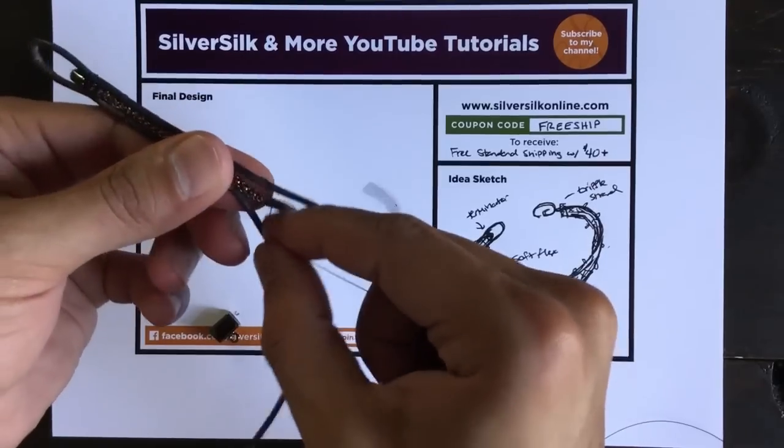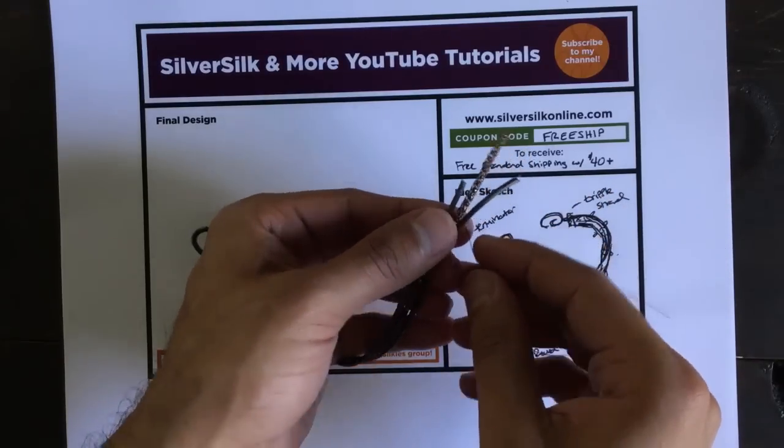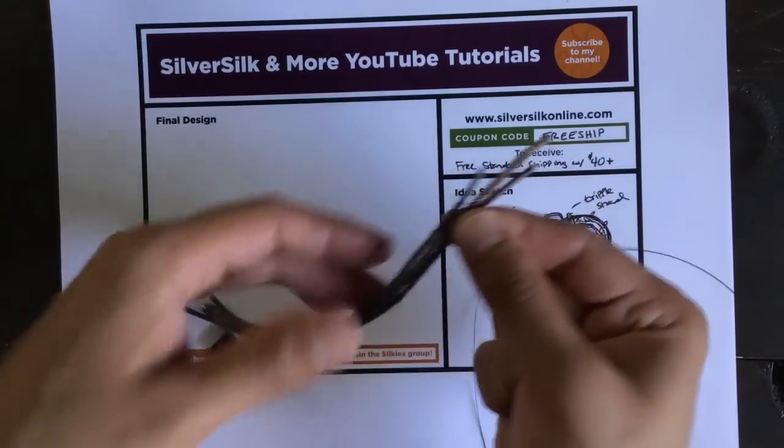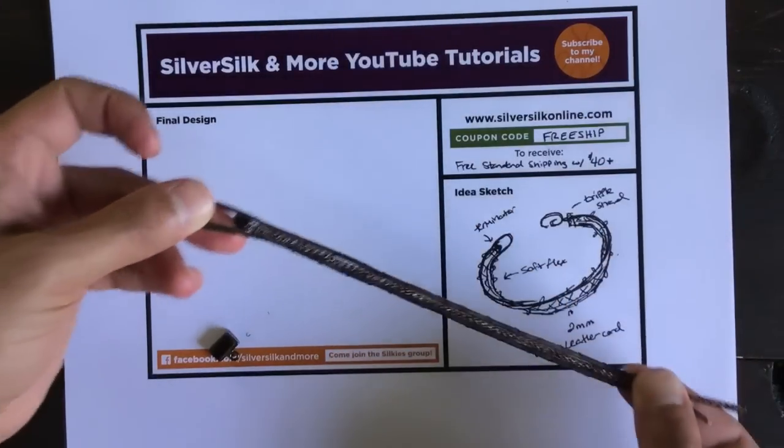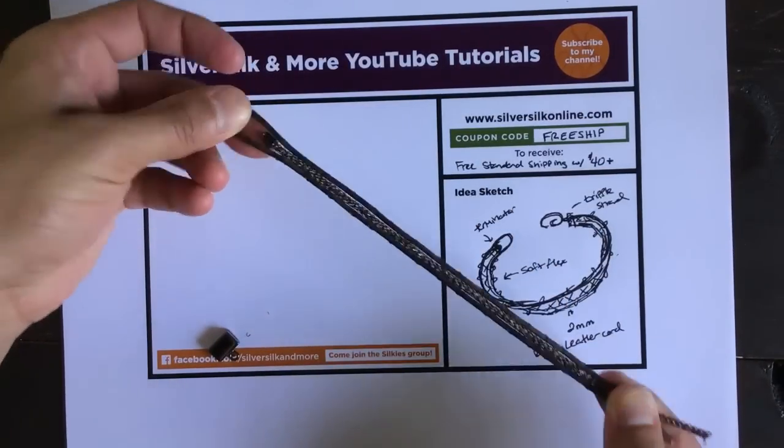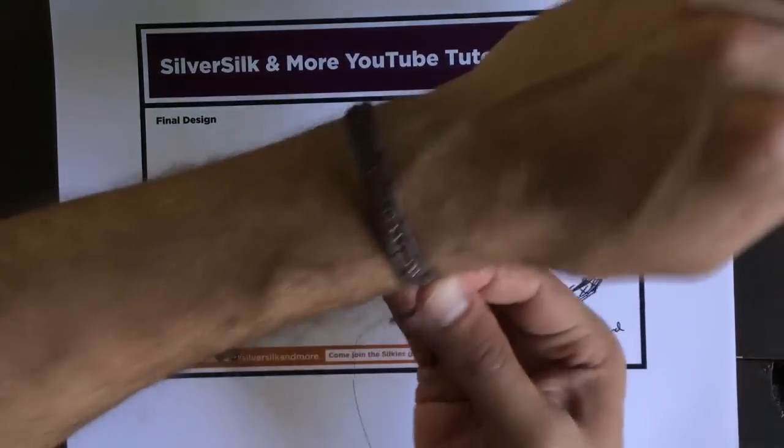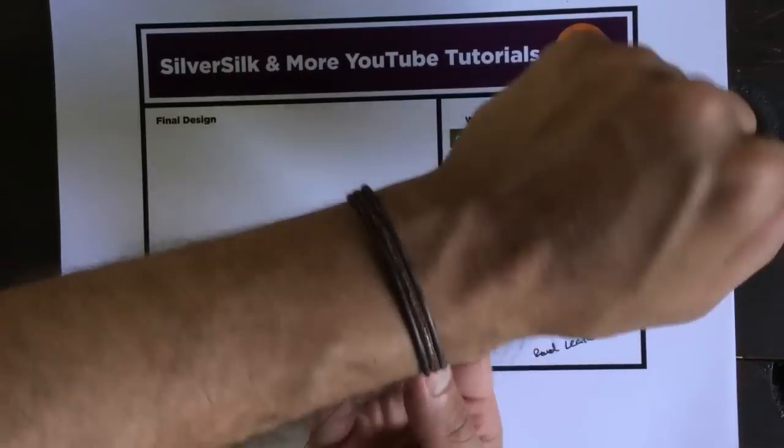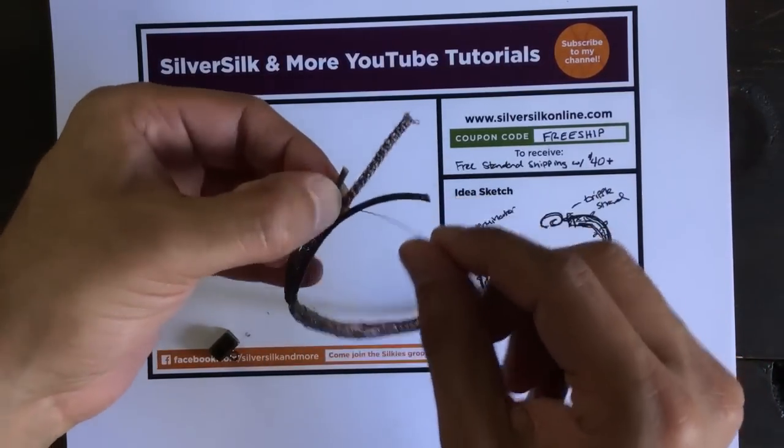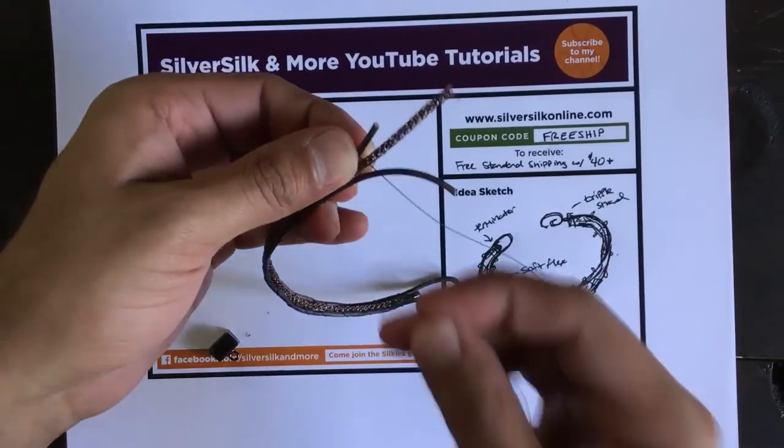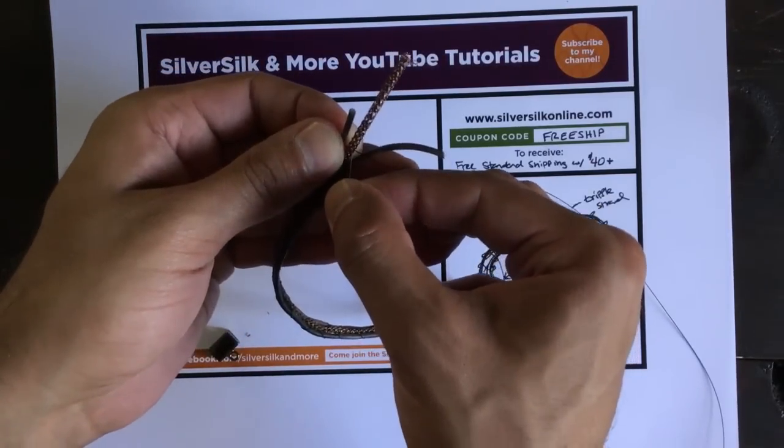Okay, I went ahead and reached the end of my stitch work here. As you can see, it all came together perfectly in alignment and it looks really good whenever I put it on myself. I think that's going to be a very cool bracelet.